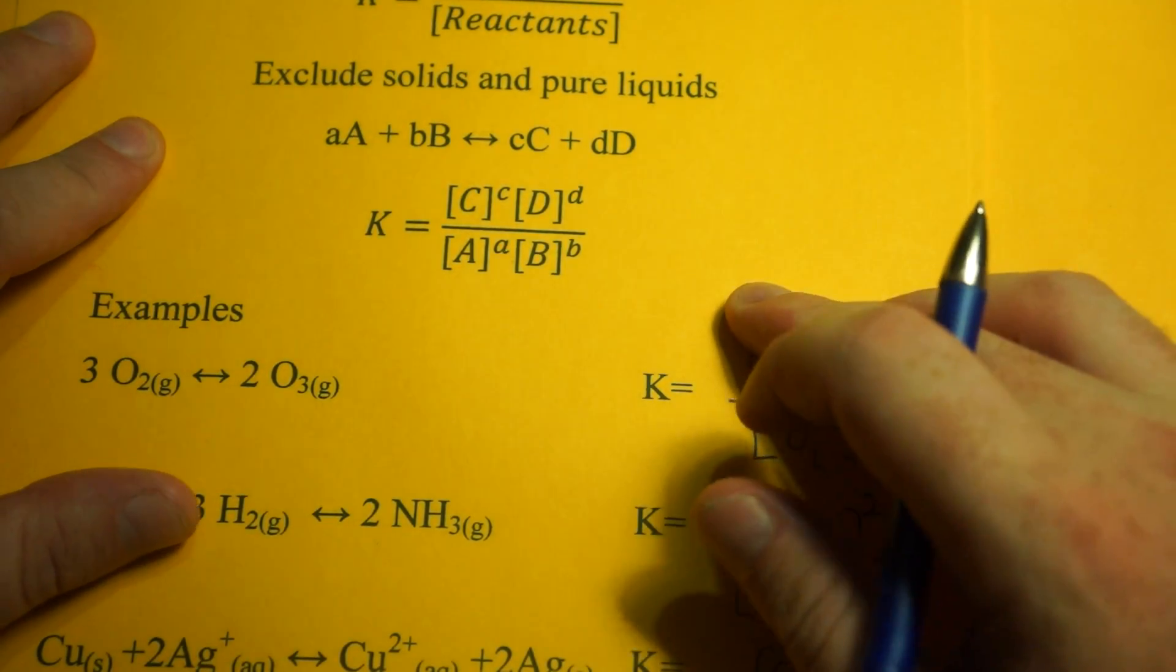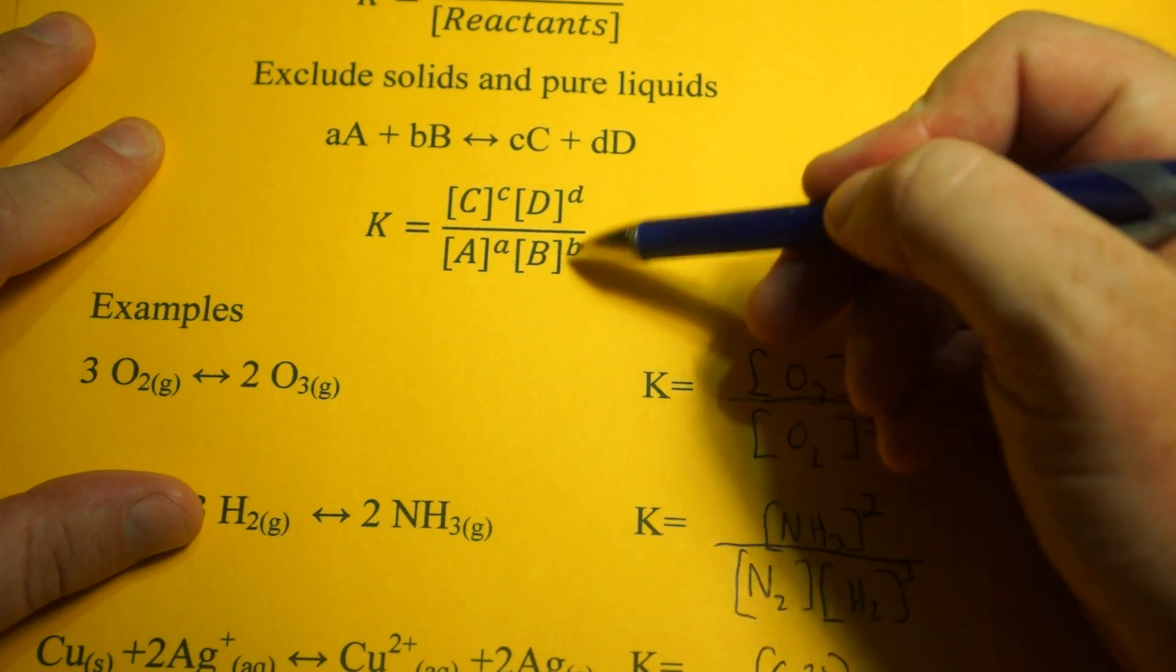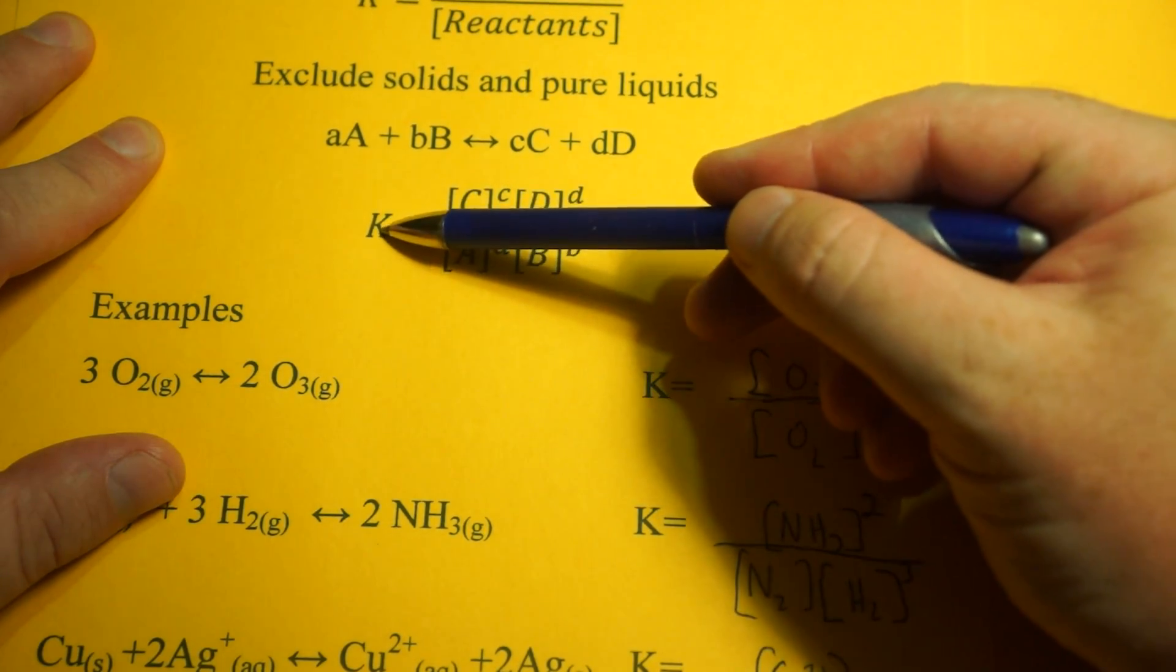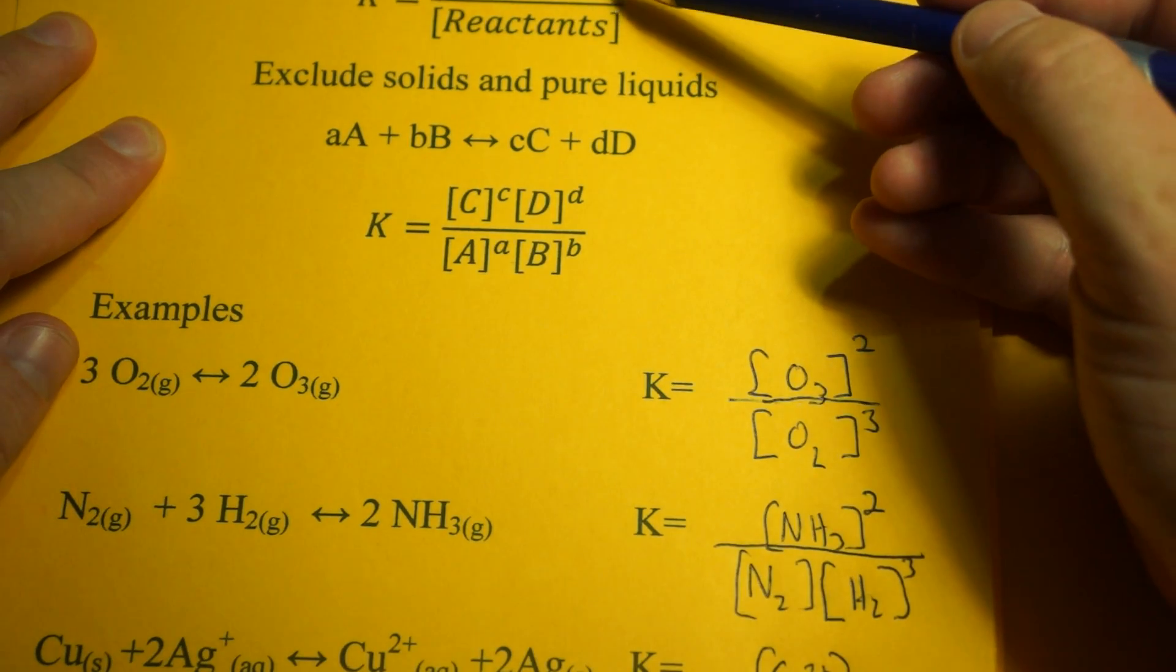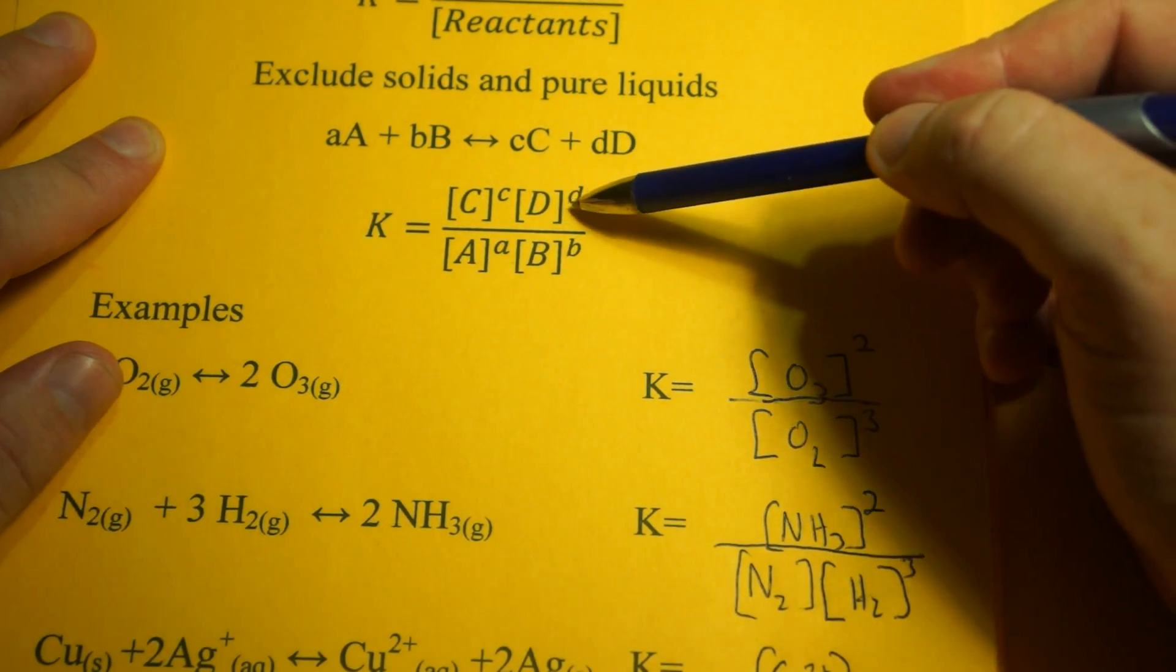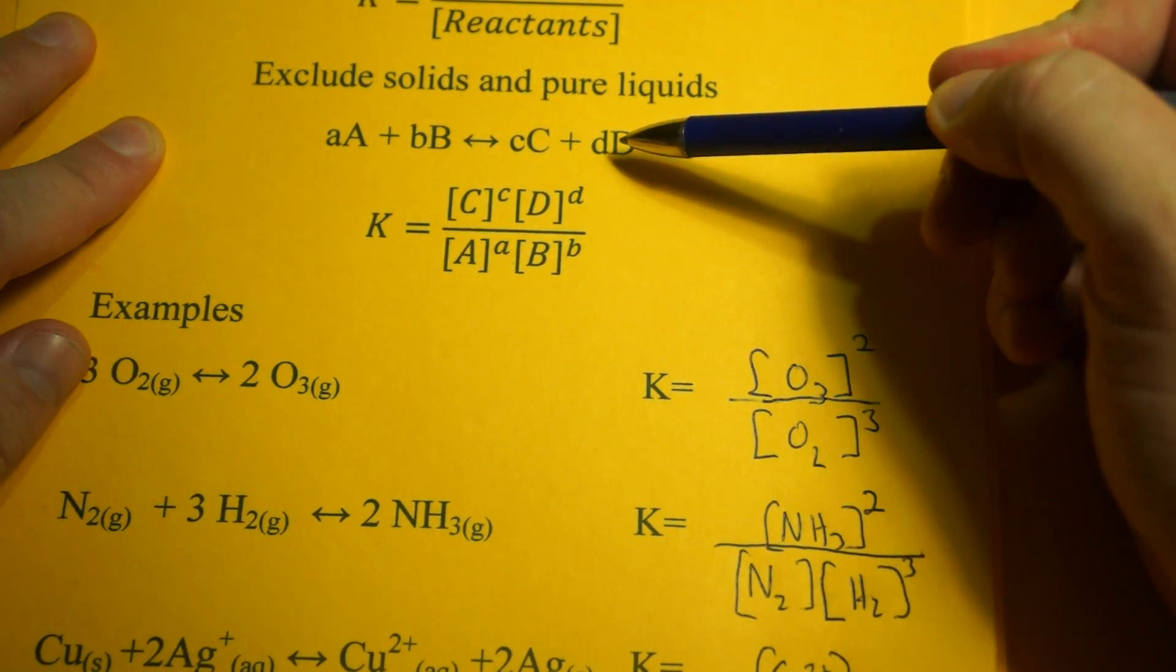When it comes to K, the general rule of thumb—since it's products over reactants—if K is a number greater than one, we say it favors the products, or the equilibrium lies to the right, because the products are on the right.